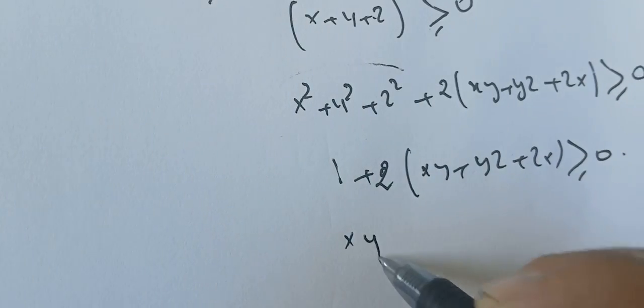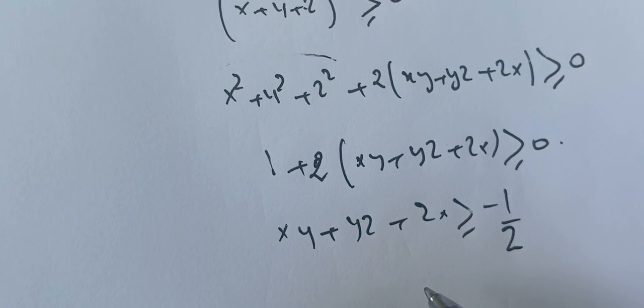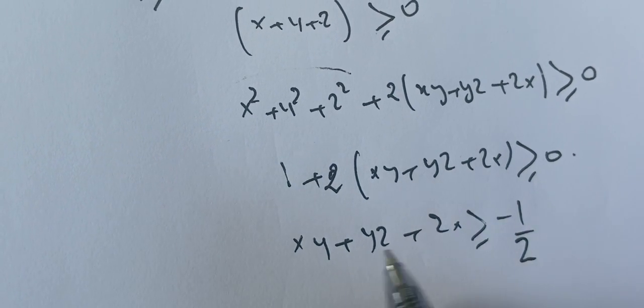We get xy+yz+zx≥-1/2. So this is the minimum value.